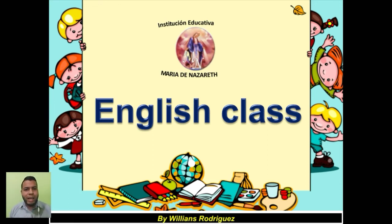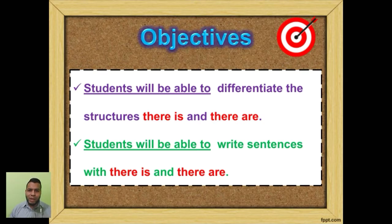As usual we start by reading today's objective and we have two objectives today. Students will be able to differentiate the structures, there is and there are, and students will be able to write sentences with there is and there are.